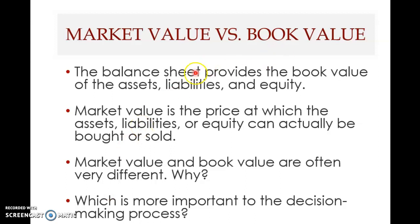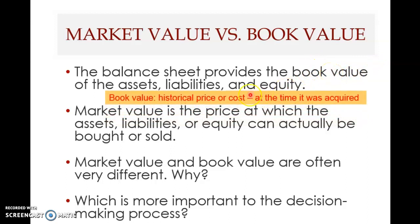The balance sheet provides the book value of assets, liabilities, and equity. Book value means the historical price or cost of an asset, liability, or equity at the time it was acquired. Market value, on the other hand, is the price at which assets, liabilities, or equity can actually be bought or sold now — it is the current value. Book value is historical value; market value is current value — that is the key difference between the two.